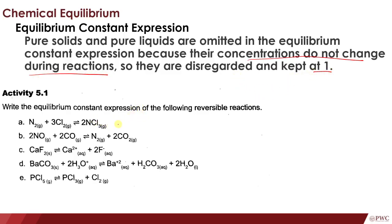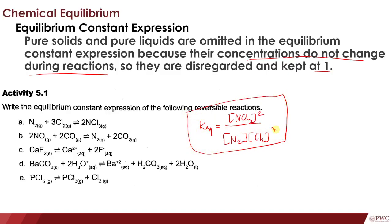For the first reaction, the equilibrium constant expression is: Keq = [NCl3]² over [N2]¹ × [Cl2]³. The product is NCl3 with coefficient 2, so it is raised to the power of 2. The reactants are N2 raised to the power of 1 and Cl2 raised to the power of 3. That is the equilibrium constant expression for reaction 1.